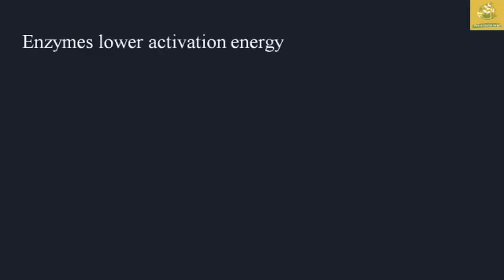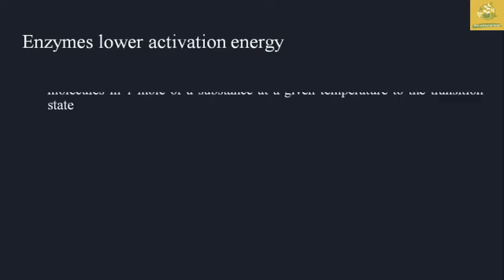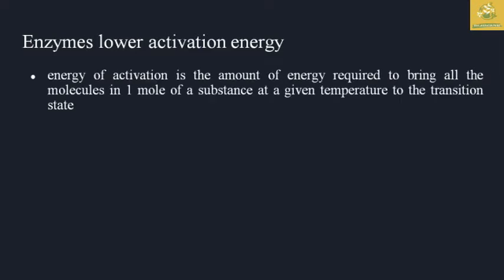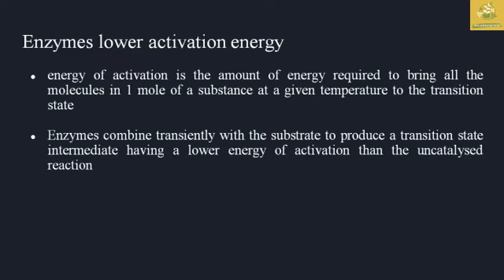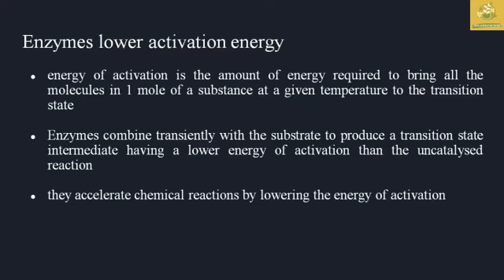Now we are going to see about how enzymes lower activation energy. The energy of activation is the amount required to bring one mole of substance at a given temperature into a transition state. Enzymes combine transiently with the substrate to produce a transition state intermediate having lower energy of activation than the uncatalyzed reaction, accelerating the chemical reaction by lowering the activation energy.